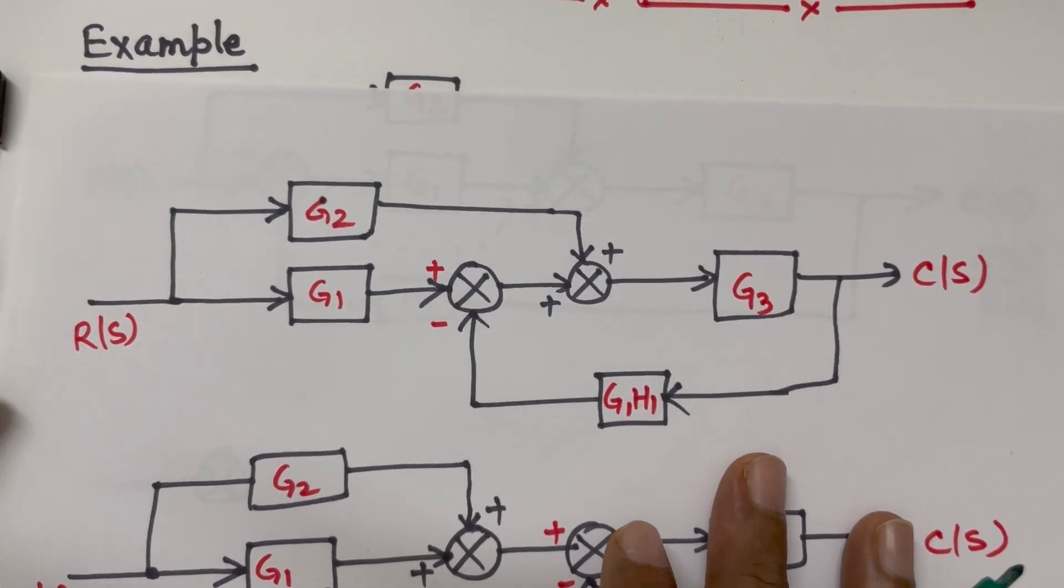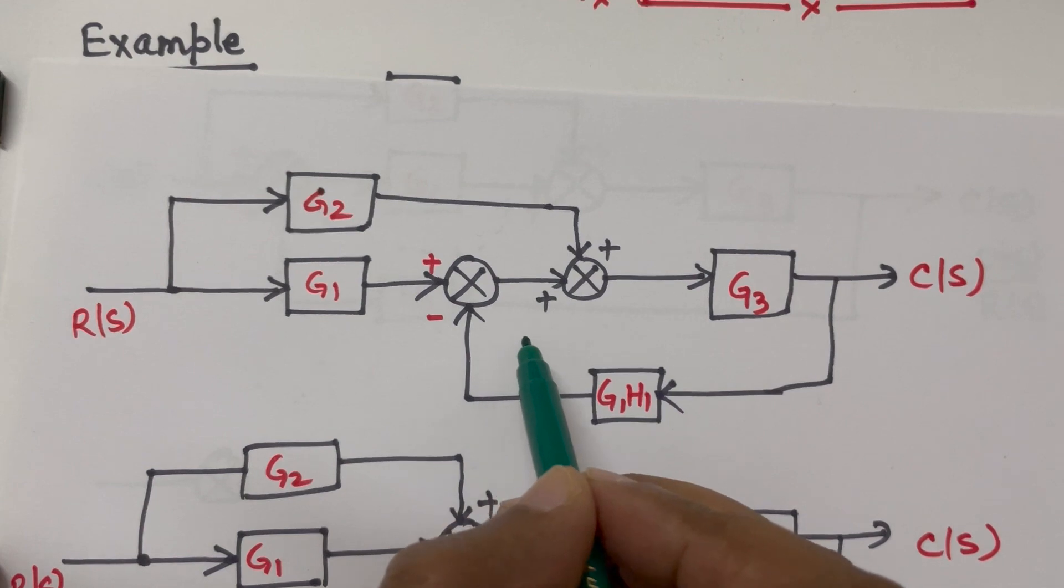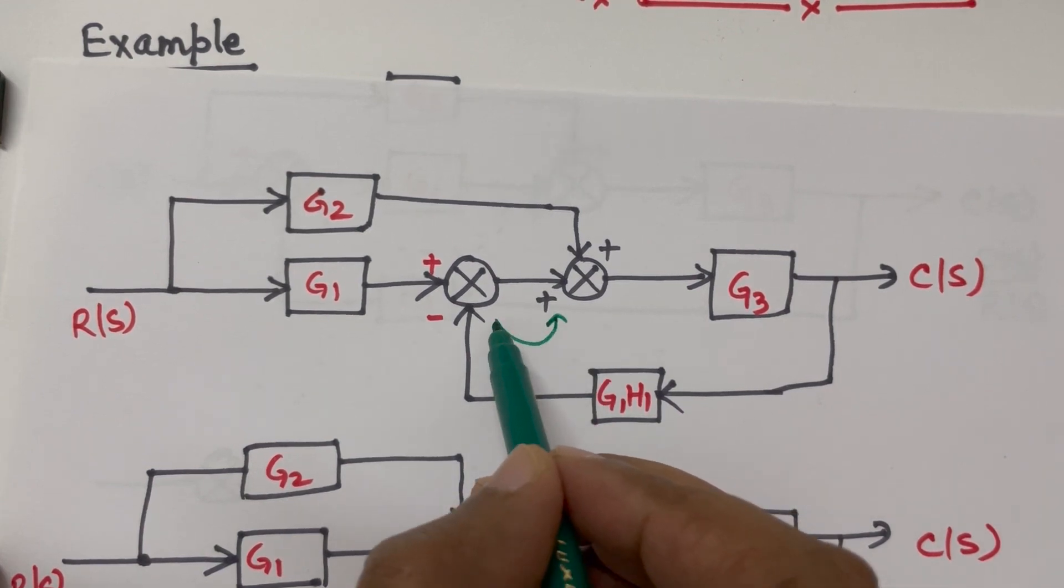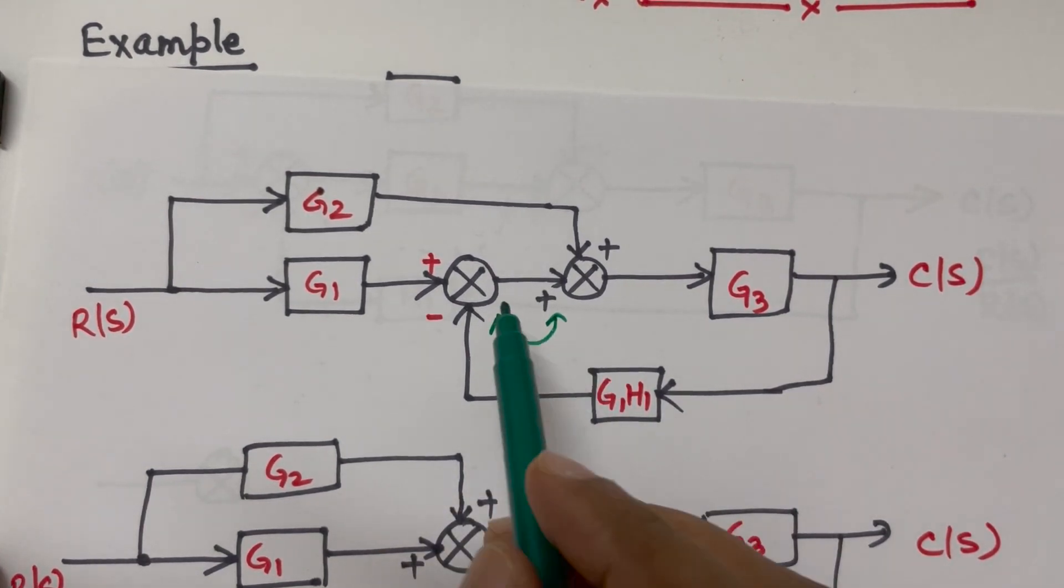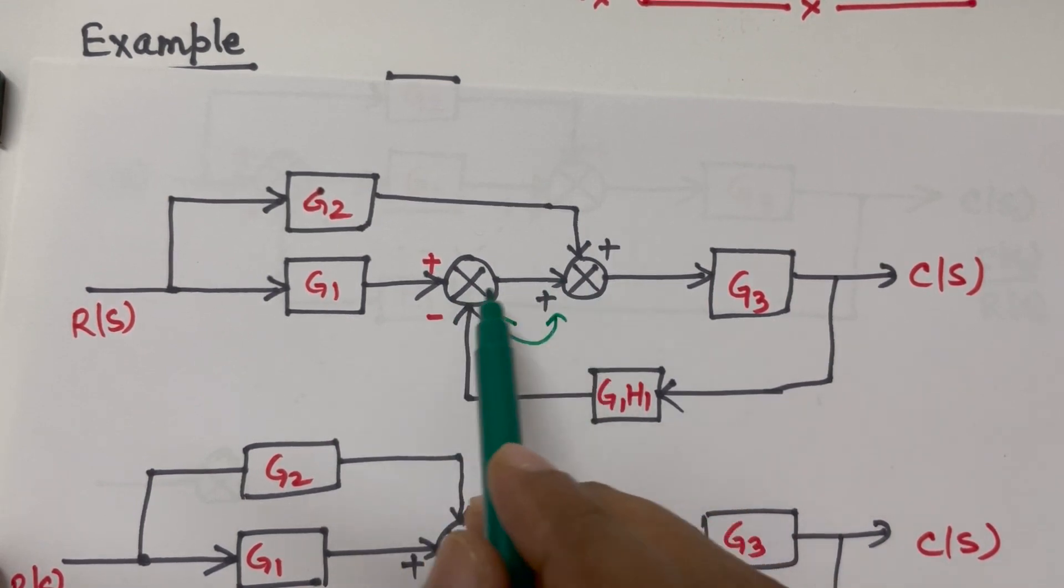Now we can see there are two summing points next to each other. So whenever there are two summing points next to each other we can interchange them.